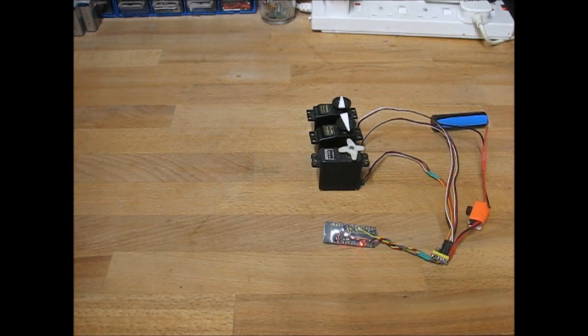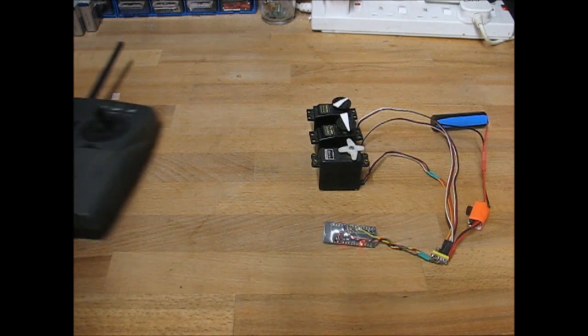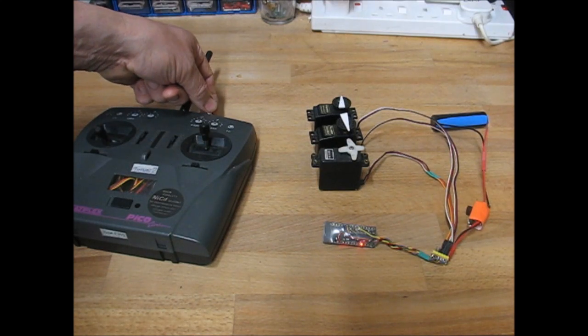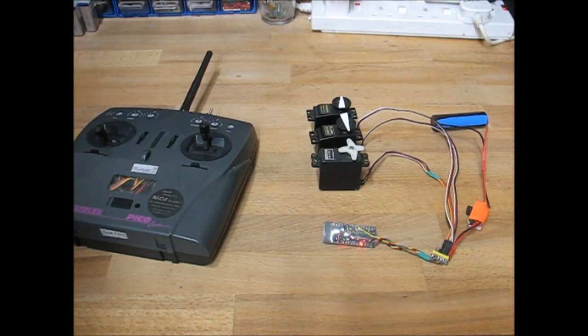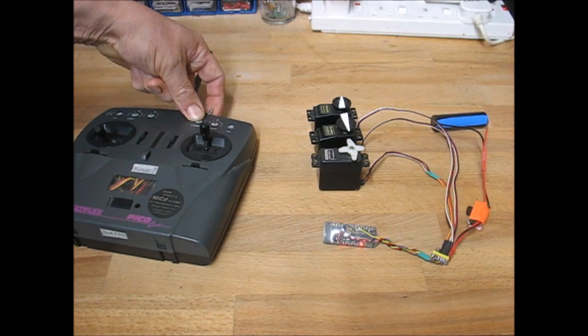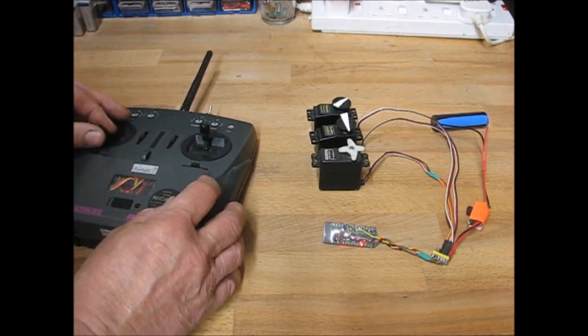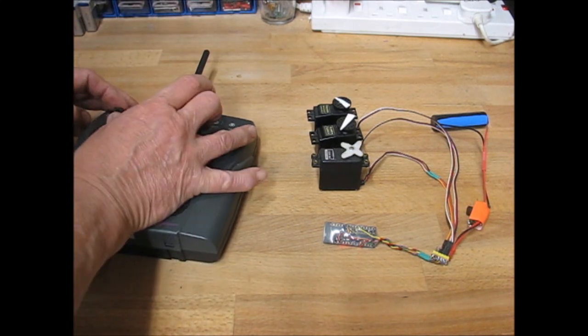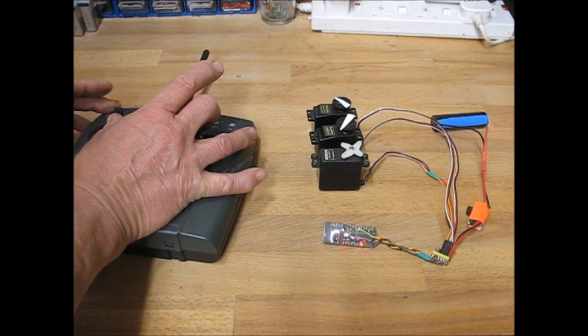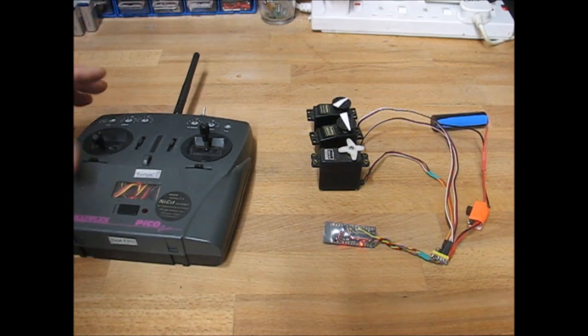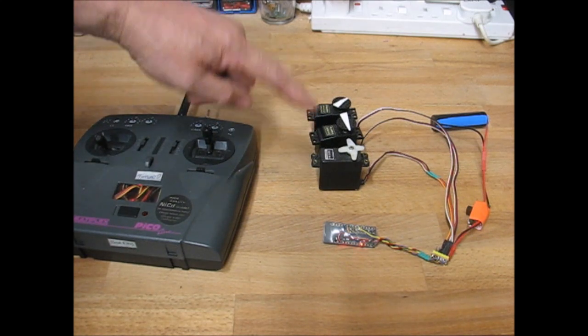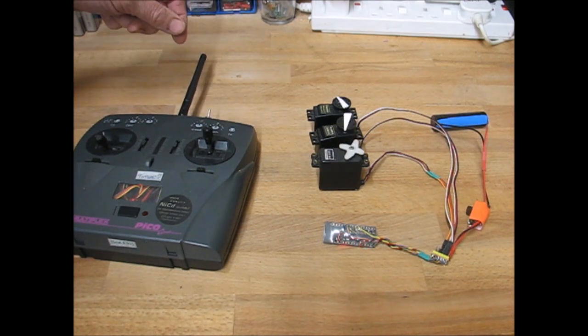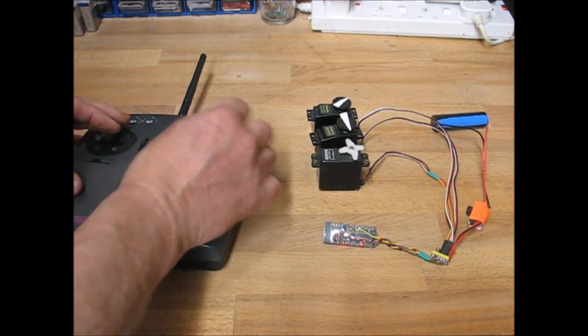Right, to demonstrate failsafe it's easier to use a proper transmitter. At the moment I've got failsafe set to neutral. I've switched the transmitter off and all the servos are at neutral. If I want to set it to... right, full throttle is anti-clockwise. If I want to set these to the corner of the stick I can just press the button on the transmitter. That becomes the new failsafe. So when I switch off that should go to full throttle in the corner of the stick settings, which it does.